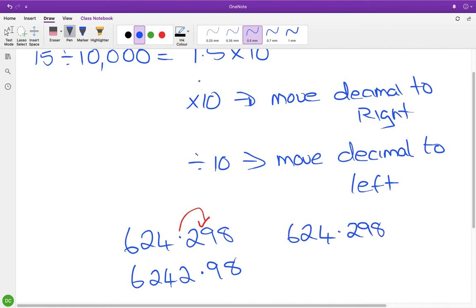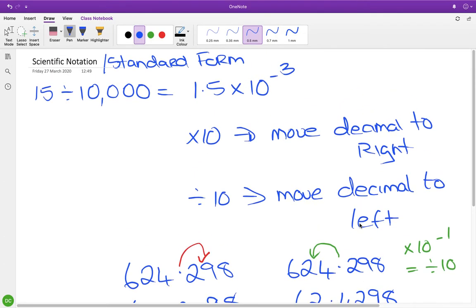Or if I took 624.298 and wanted to divide it by 10, or multiply by 10^-1 (which is the same as dividing by 10), I would move the decimal one step to the left and end up with 62.4298, which is ten times smaller. That's what it's based on.